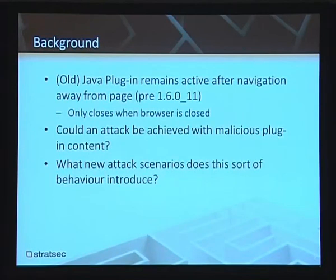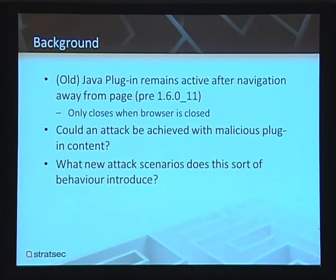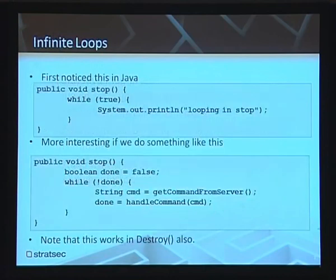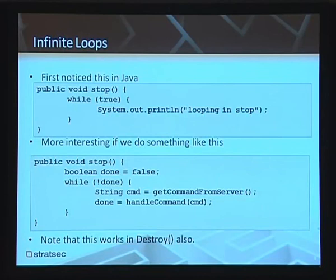A bit of background on where this came from: I noticed in the old version of the Java plugin — it's been fixed now — that when you navigate away from a page, the Java applet that had loaded, although no longer shown, would still be running in the background. It only actually closed when the browser was closed. That's really where the idea came from. It's quite trivial to do — an infinite loop is really all you need. If you override the stop function in an applet, it'll just keep executing, showing the code is still running.